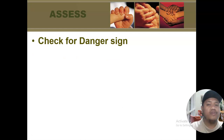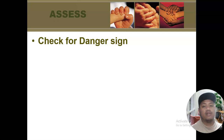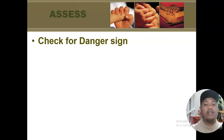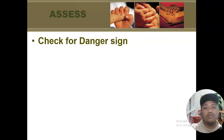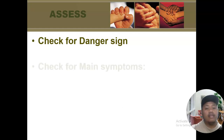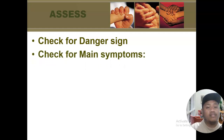After that, we assess for danger signs. The danger signs are: convulsing now or convulsion within three days; unable to breastfeed, drink, or eat; vomits everything; and abnormally sleepy, lethargic, or difficult to awaken. Any of these conditions would place the child under the pink classification, which is the severe classification. The next thing to do is to check for the main symptoms.